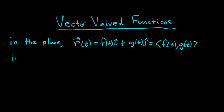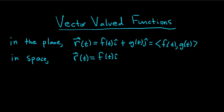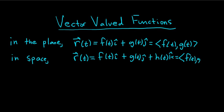In 3D space, it's very similar, except we have an extra component. So we have r(t) equal to f(t) î plus g(t) ĵ plus h(t) k̂. And again, writing in component form, we have the angle brackets ⟨f(t), g(t), h(t)⟩. That's how you write down vector-valued functions — they map real numbers to vectors.